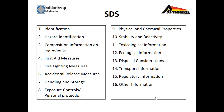SDSs contain 16 elements, including: identification, hazard identification, composition, information on ingredients, first aid measures, firefighting measures, accidental release measures, handling and storage, exposure controls, physical and chemical properties, stability and reactivity, toxicology information, ecological information, disposal considerations, transport information, regulatory information, and other information.